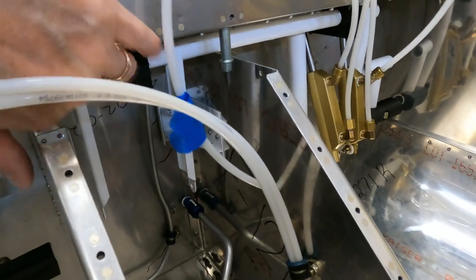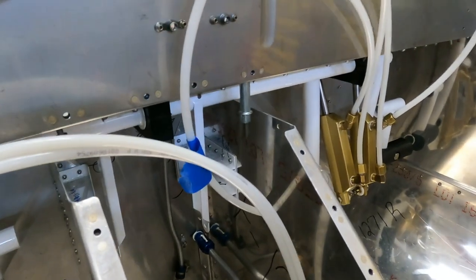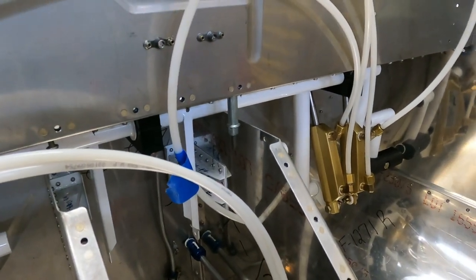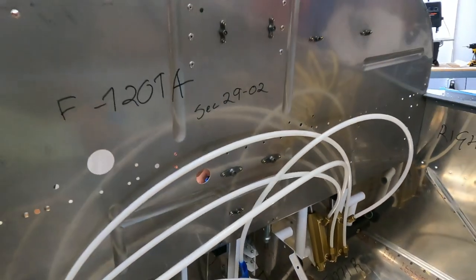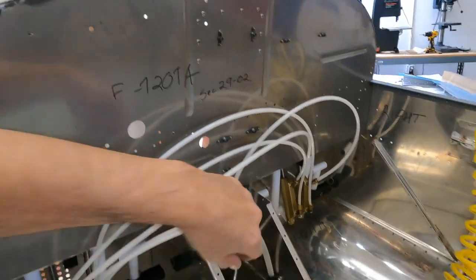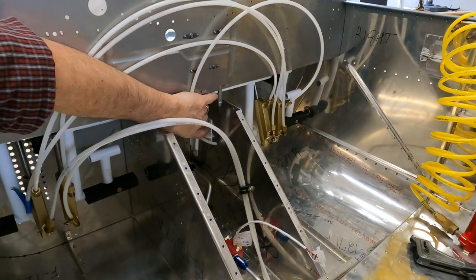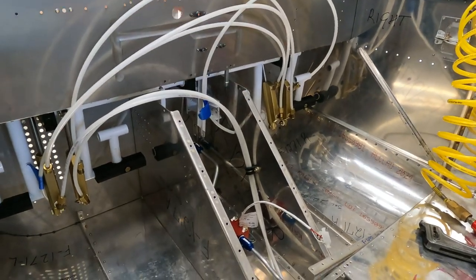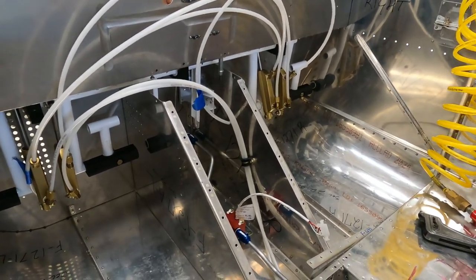The return line mounts underneath the shelf and comes up through the top of the shelf on the firewall. Working in this tight space with the rudder pedals in place is a bit of a challenge.